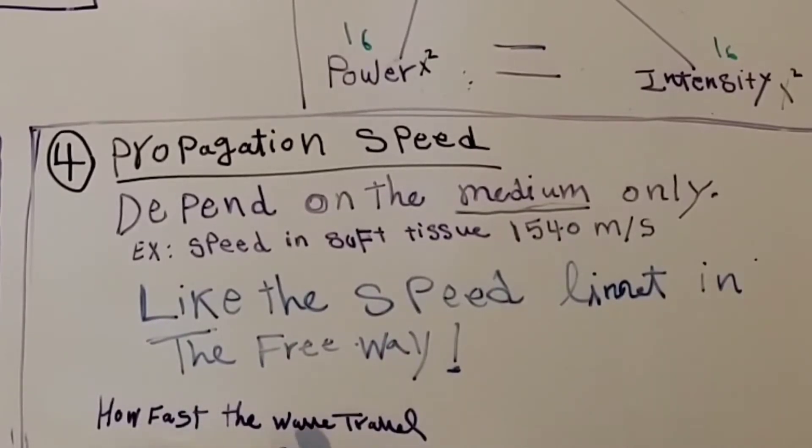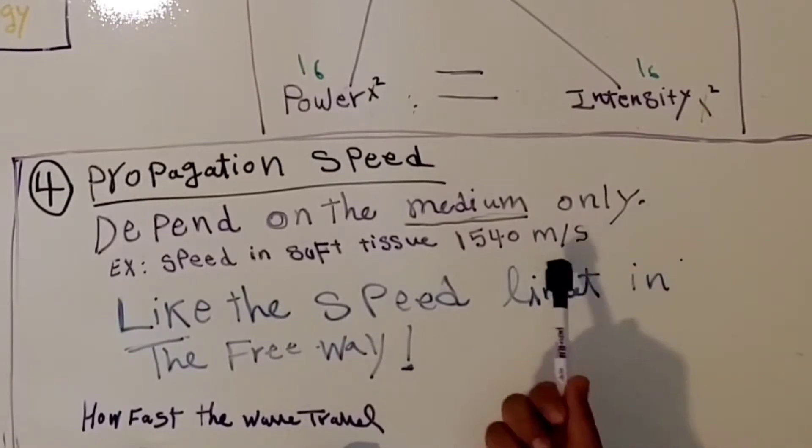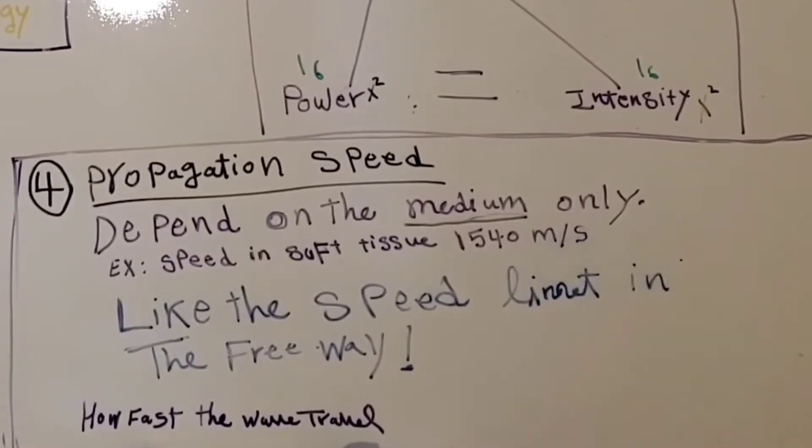The propagation speed tells us how fast a wave travels in a medium and it depends only on the medium. Example: speed in soft tissue is 1540 meters per second. As you see here, we use the unit of meter per second.